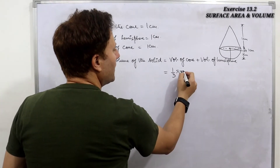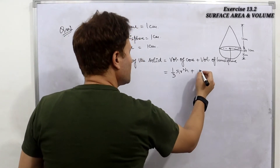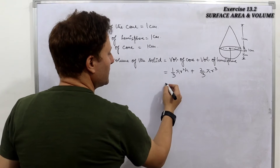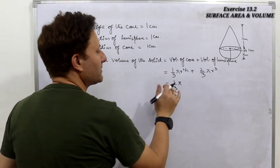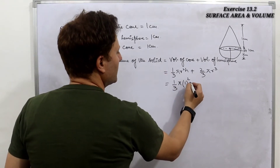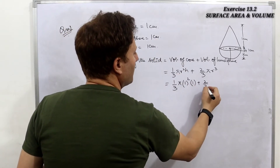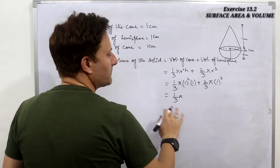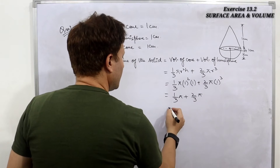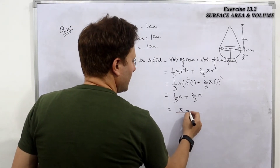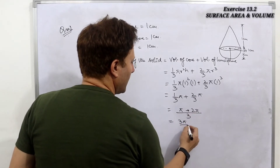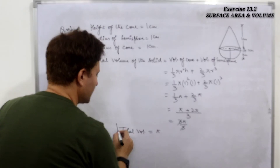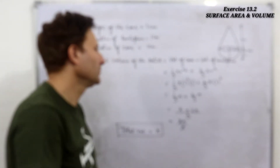Volume of cone is (1/3)πr²h and volume of hemisphere is (2/3)πr³. Since radius is 1 cm and height is 1 cm, we get (1/3)π + (2/3)π. Taking the LCM, that gives us π + 2π over 3, which equals 3π/3. So the total volume of the solid is exactly π cubic centimeters.